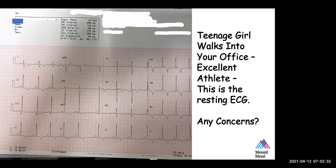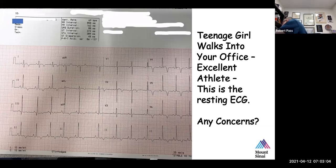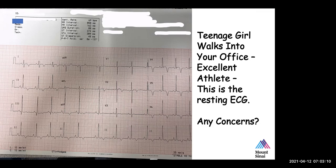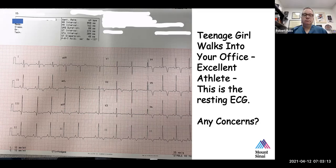We're looking at the long strip below. We have a variable heart rate. You see a P in front of every QRS with a steady PR interval. There's some irregularity in the heart rate, so I'm trying to figure out if this is a sinus arrhythmia or if there are some PVCs that are missing. The P's seem to come on time, so I would call this sinus arrhythmia. Okay, I agree with that statement.